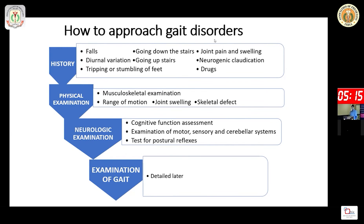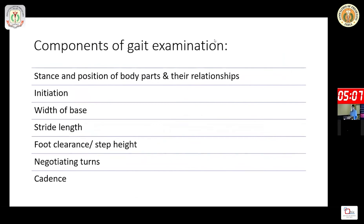In the neurological examination, we have to assess cognitive function, and perform examination of motor, sensory, and cerebellar systems, and the examination of gait. Gait examination is not simply asking a patient to move about or to walk — it is a systematic examination which starts from sitting up from the chair.